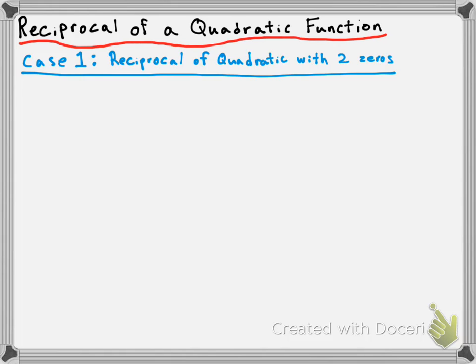If the denominator has two zeros, we know it's going to have two vertical asymptotes. But we know from the past that quadratics can have two, one, or no x-intercepts, which means we'll have cases where we might not have two vertical asymptotes. So let's look at this first case with the equation f of x equals negative two over x squared plus x minus two.